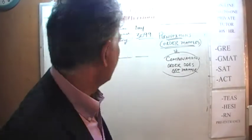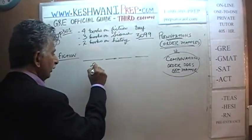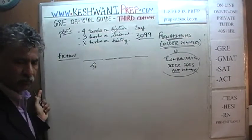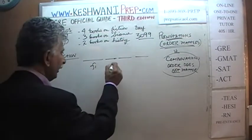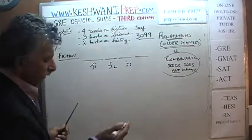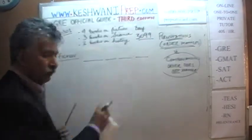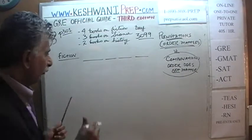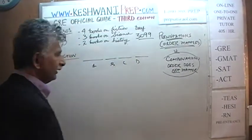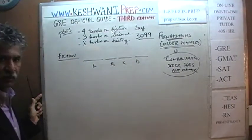If you have four books on the subject of fiction — let's say the four titles are F1, F2, F3, F4, or if you like A, B, C, D — if you have four books with four different titles, putting them as A, B, C, D is one way of placing them on the shelf. Or B, A, C, D is another. Order matters here.